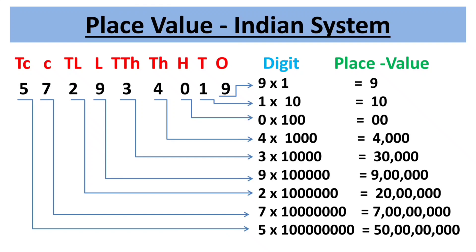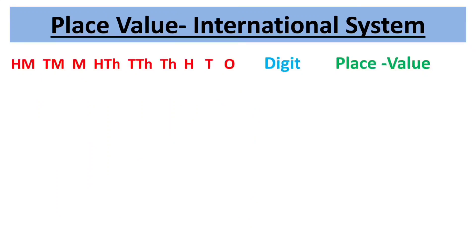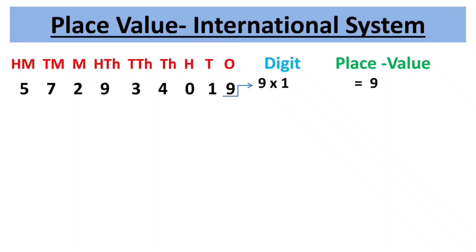Next is the international place value system. Here, nine places are grouped into three periods: ones, thousands, and millions. Starting from the right, the first period is ones, consisting of three places: ones, tens, and hundreds. Place value of 9 is 9 × 1 = 9. Place value of 1 is 1 × 10 = 10.